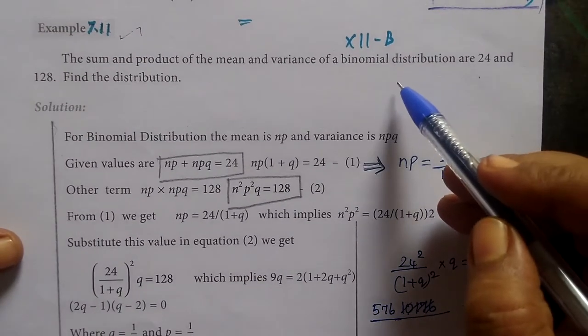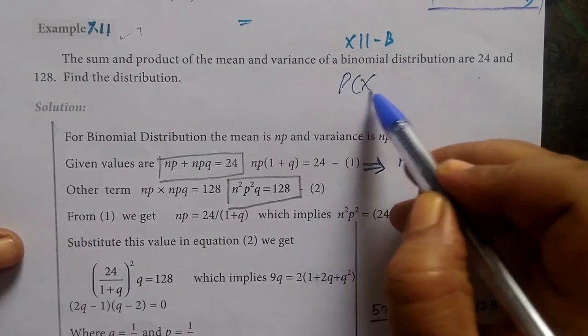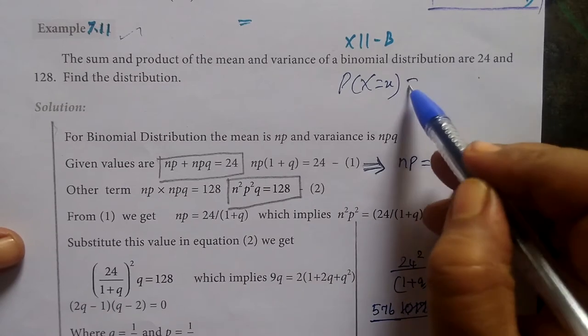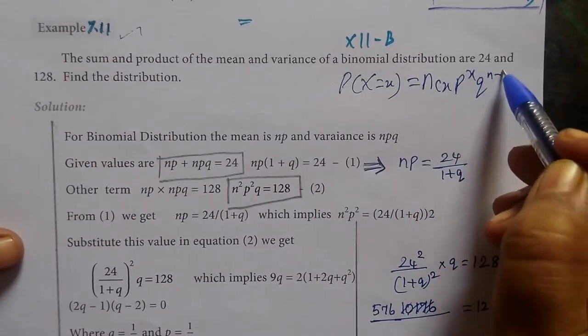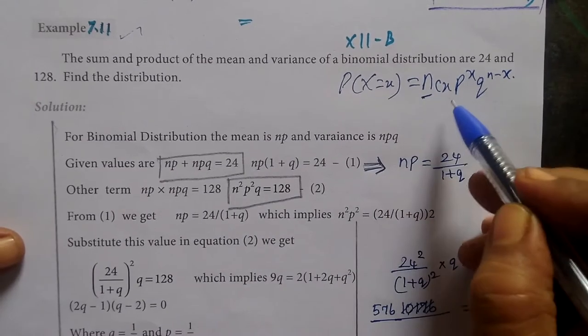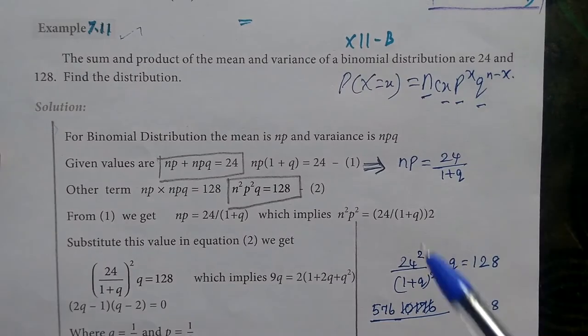So, to find the distribution we need the formula p of x equal to ncx p power x q power n minus x. So we need n, p, and q.